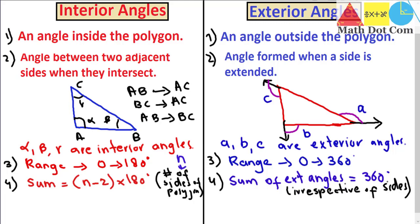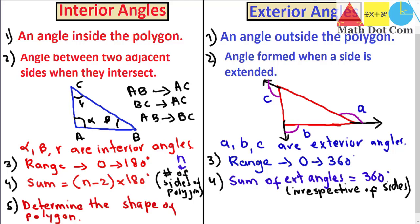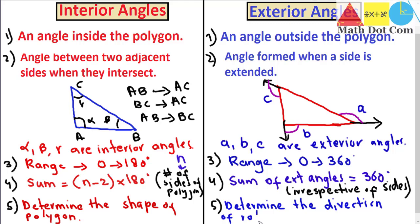The last difference is why we use each type. Interior angles basically determine the shape of the polygon, while exterior angles determine the direction of rotation around the polygon. This also relates to the value of 360 degrees, which refers to a full circle. That's all from today's lecture. Thank you.